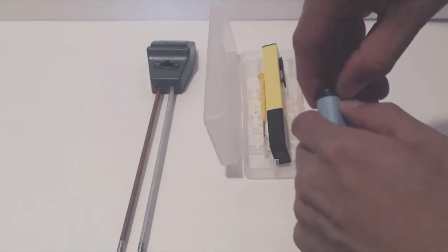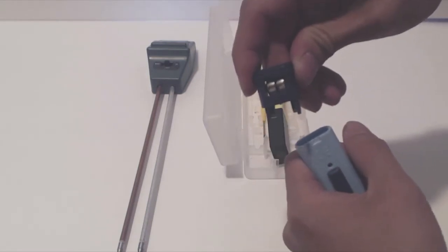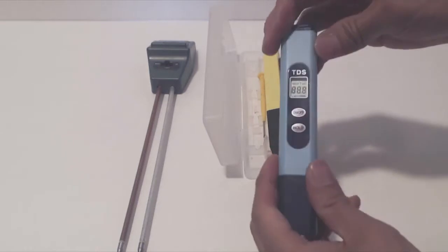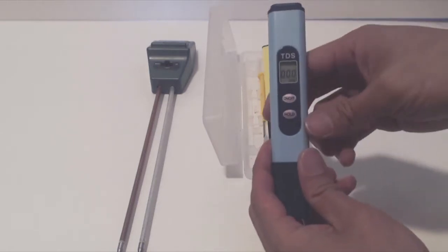The TDS meter requires two coin-style batteries that are again included, and loaded in the top of the unit. It has a simple LCD display readout, and has an instant read tool.